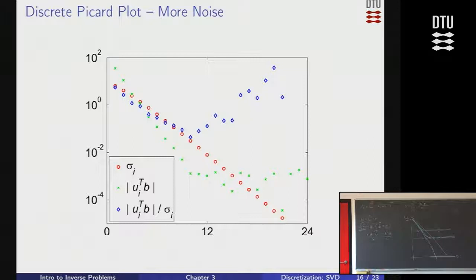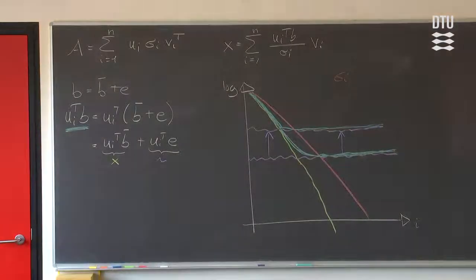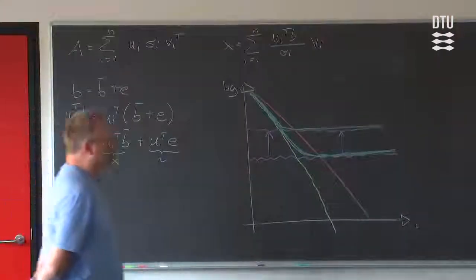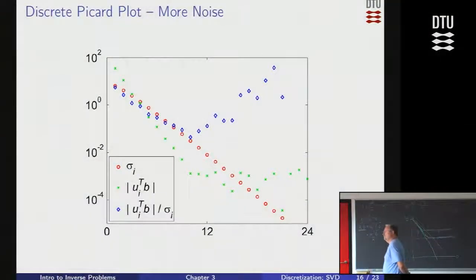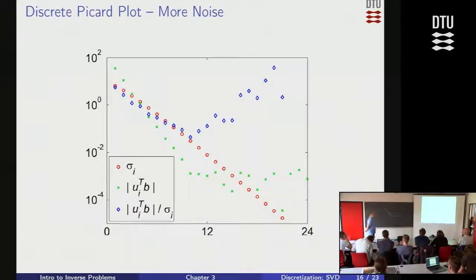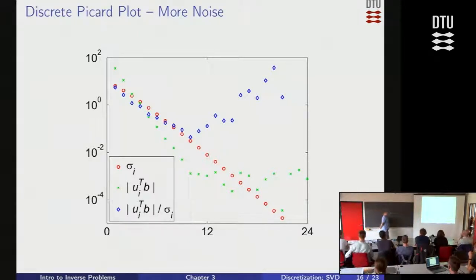What we have learned from this numerical experiment: we've seen the influence of rounding errors and the influence of noise in our data. Typically, measurement errors are much, much larger than the influence of rounding errors, so you don't have to worry too much about rounding errors — although you always have to use good algorithms. The main concern is errors in the data. In this course we only talk about errors in the right-hand side, though in some applications there are also errors in the matrix A, which makes things even more complicated.